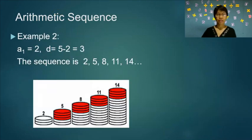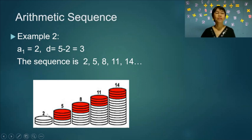Example 2: a₁ equals 2 and the common difference is 3. Looking at the illustration, we start with two coins and add three coins at every level. So the sequence is 2, 5, 8, 11, 14, and so on.